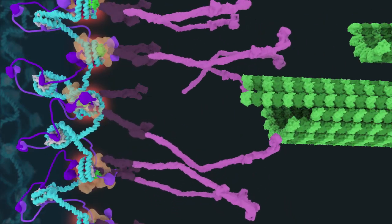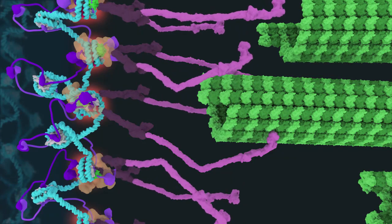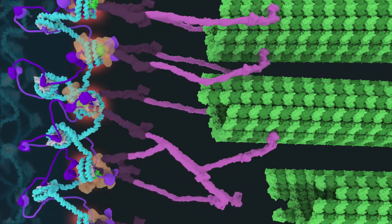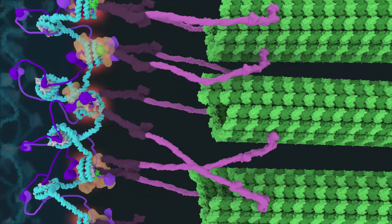A simplified arrangement is shown where the centromere components nucleate the recruitment from the cell cytoplasm of kinetochore components that subsequently attach to the microtubules of the mitotic spindle.